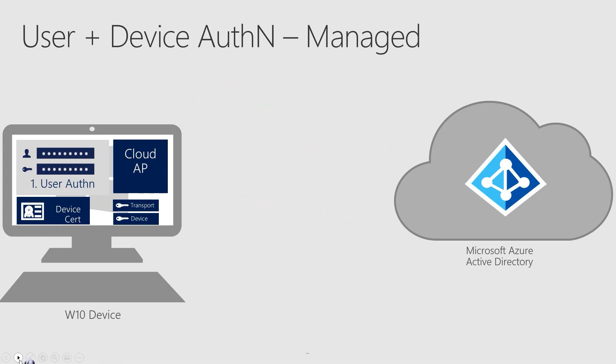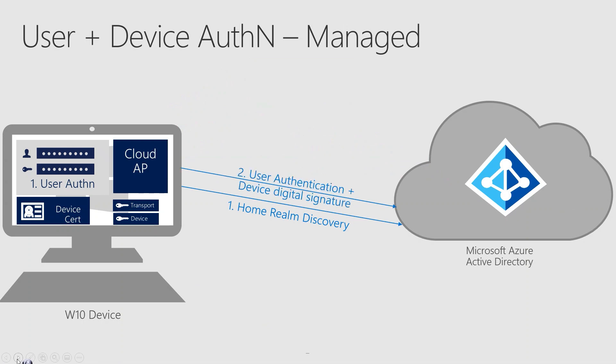In a managed environment, there are two key differences in how Azure AD authentication works. The first difference is that when Cloud AP does Home Realm Discovery, it points back to the Azure AD authentication endpoint instead of a federation provider. The second difference is how Cloud AP sends the authentication request. In the case of a password, we send the user's actual password in the request on an encrypted TLS channel. But in the case of a passwordless credential like Windows Hello for Business or FIDO2, the request is signed by the private key of that credential that is secured by hardware.